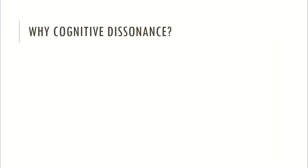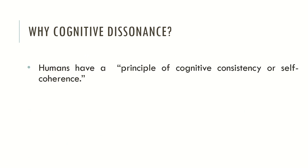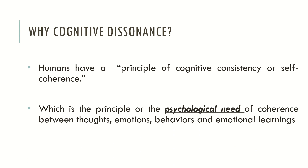So, why do people have cognitive dissonance? Because humans have a principle of cognitive consistency or self-coherence, which is the psychological need for coherence between thoughts, emotions, behavior and emotional past learnings. If we have this principle and we hold contradictory beliefs, we tend to experience discomfort that stems from these contradictory positions or oppositional beliefs. Humans are driven by the coherence principle — the psychological need defined as self-coherence — and because of this, humans tend to reduce the level of discomfort that stems from oppositional views.